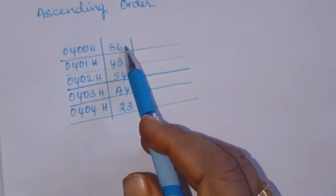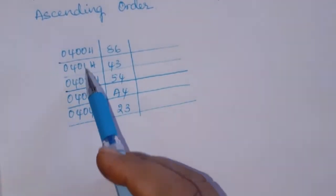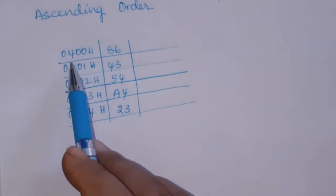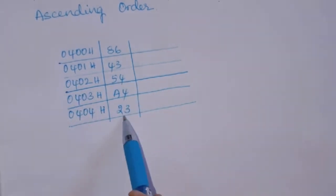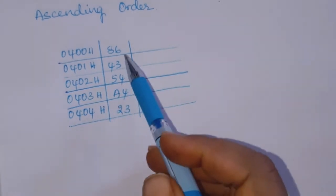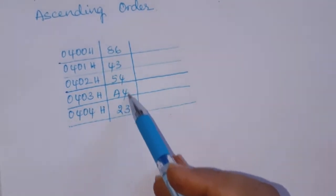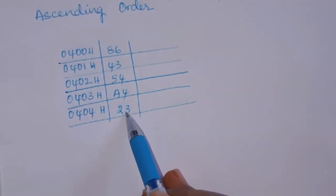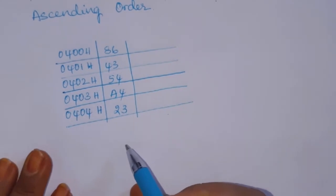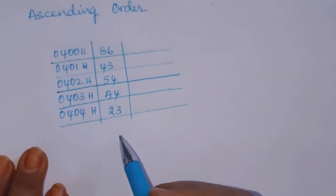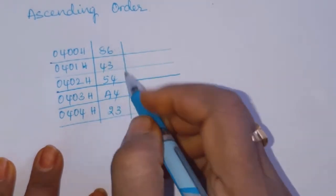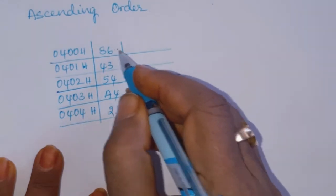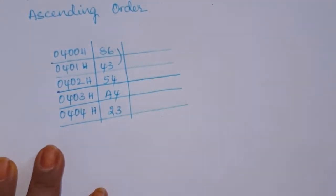Let us suppose the five numbers are in memory at these particular locations. Starting from offset address 400, we have one number, and in consecutive locations we have five numbers in memory. We need to write a program which will arrange these bytes in ascending order.